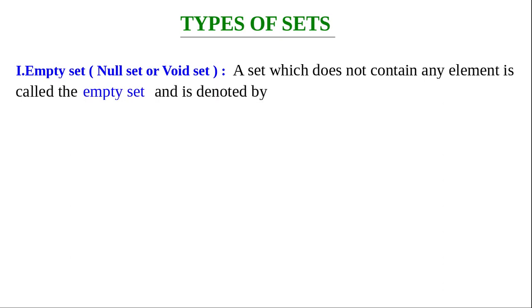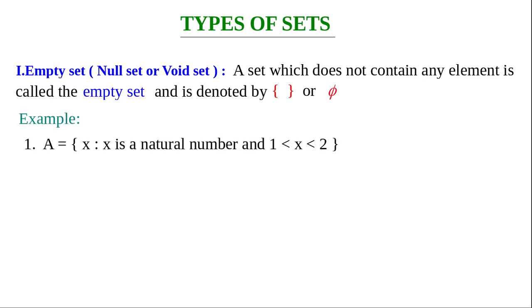It is denoted by φ or empty braces. Example one: A equals the set of all x such that x is a natural number and 1 less than x less than 2.